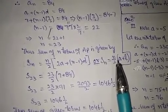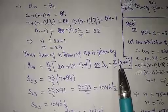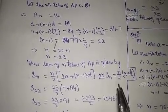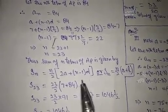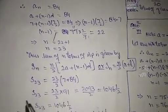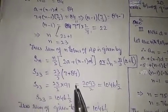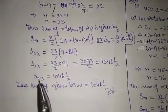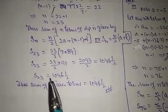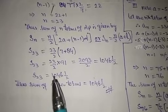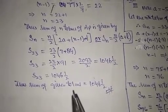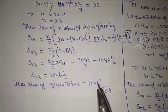Here we have the first term a = 7 and the last term l = 84, which is given in the AP. We get S23 = 23/2 × (7 + 84), giving the sum of 23 terms equal to 1046.5. Thus the sum of the given terms is 1046.5.